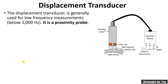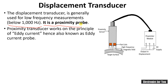As stated in part 1 of this video, the displacement transducer is generally used for frequency components below 1000 hertz and is therefore used for the lower frequency range, up to 1000 hertz. This type of transducer is also known as a proximity probe. The proximity transducer works on the principle of eddy current, hence it is also known as an eddy current probe.